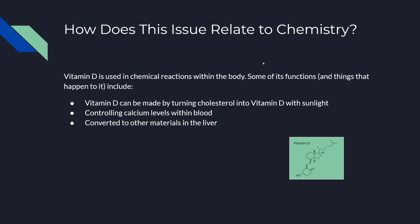So how does vitamin D deficiency, or just vitamin D in general, relate to chemistry? Vitamin D is used in chemical reactions within the body, including the controlling of calcium levels within the blood. The creation of vitamin D3 — shown in the picture to the right — occurs in your skin cells when they convert cholesterol into vitamin D3 using sunlight. Lastly, vitamin D is converted to other materials whilst it's in the liver.